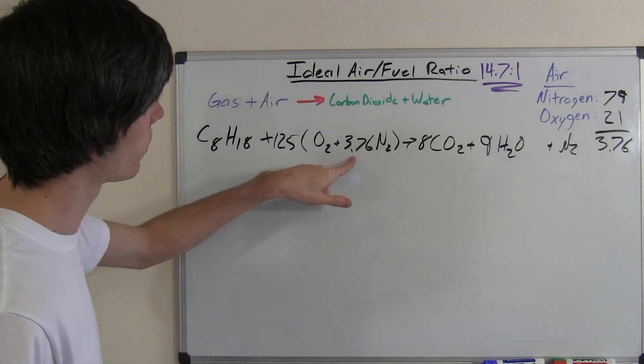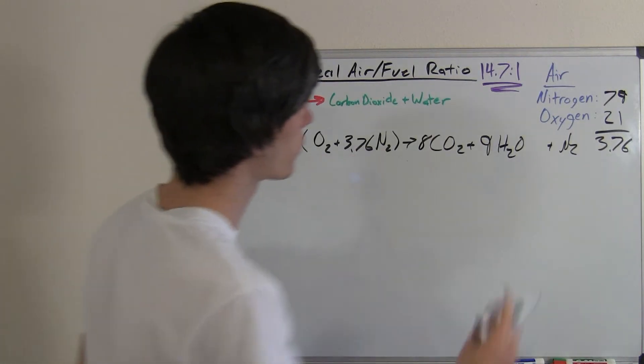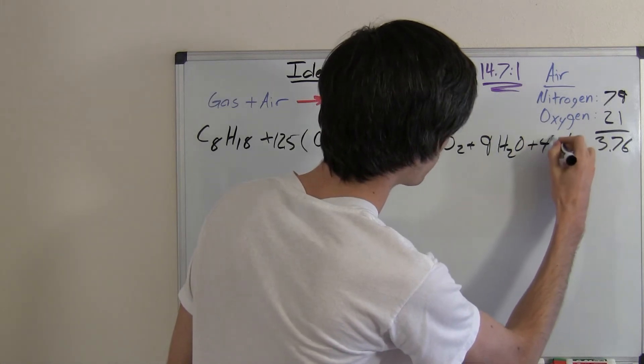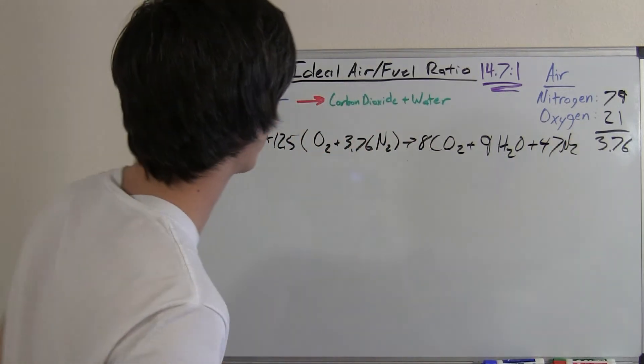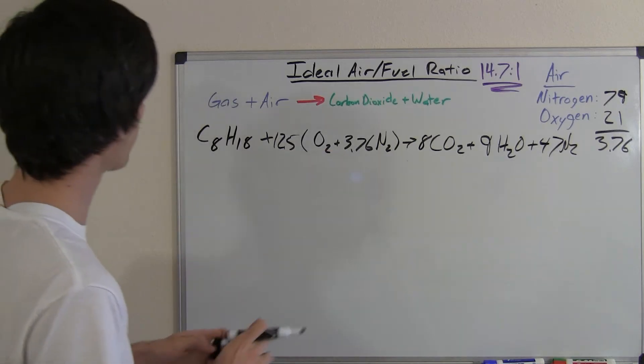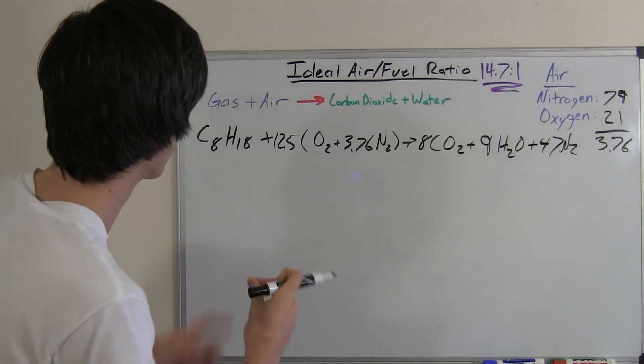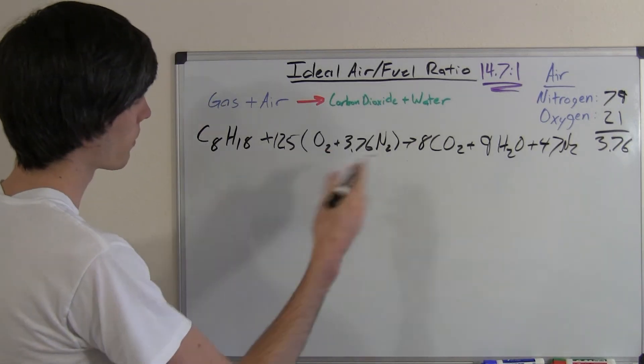We've got 3.76 nitrogens, and that should give us, I believe it's 47. That number doesn't really matter anyways, but point is, balance the nitrogens. So now that we've got this balanced out,